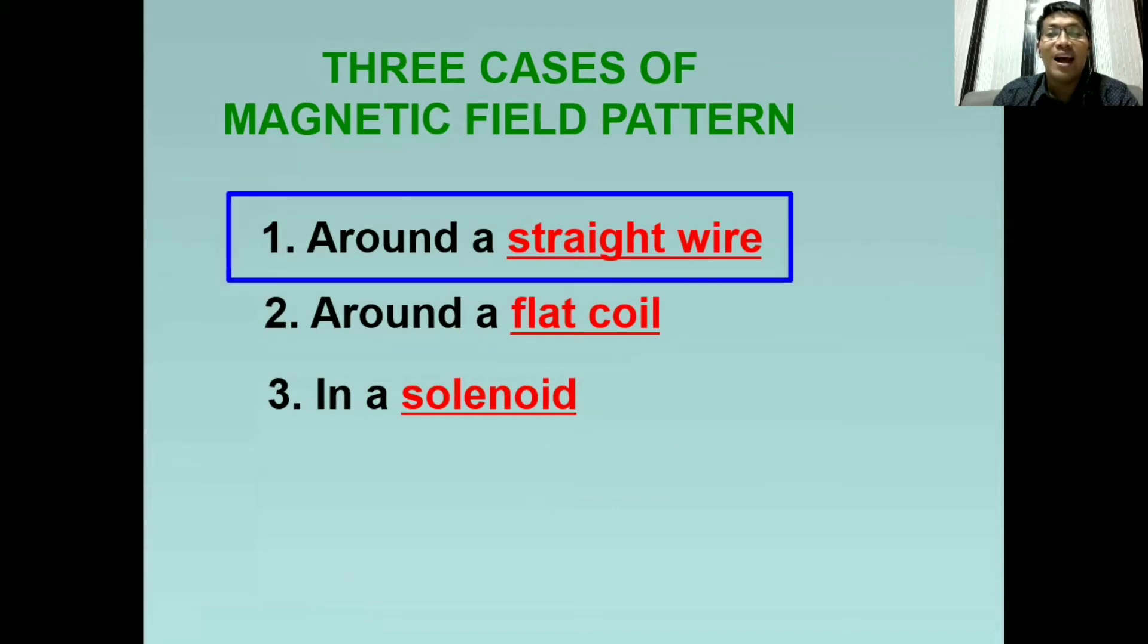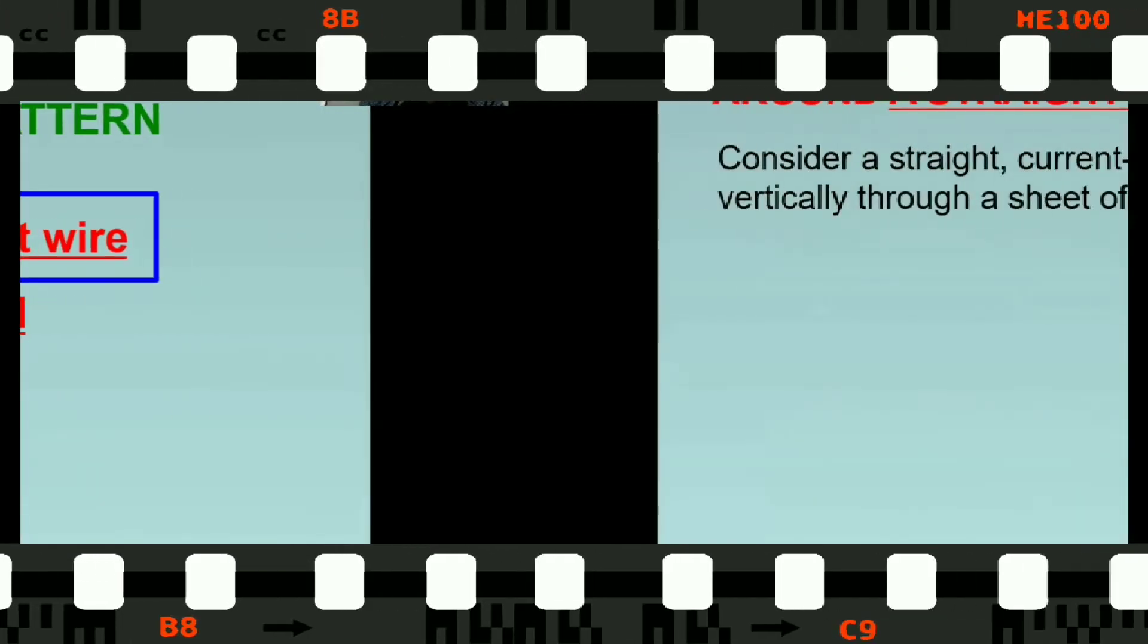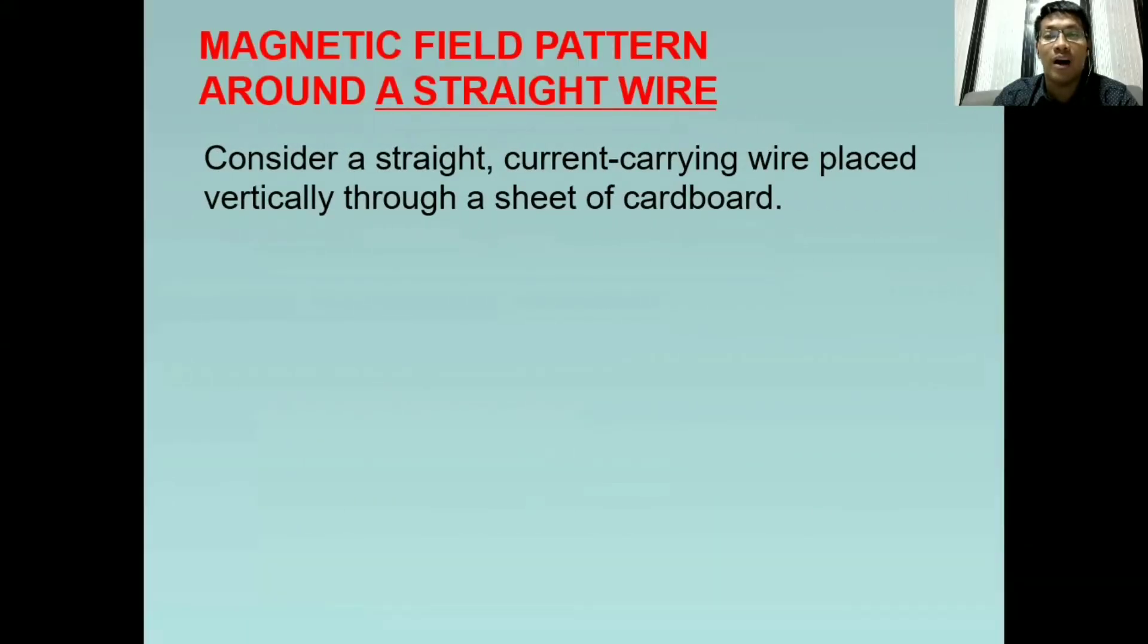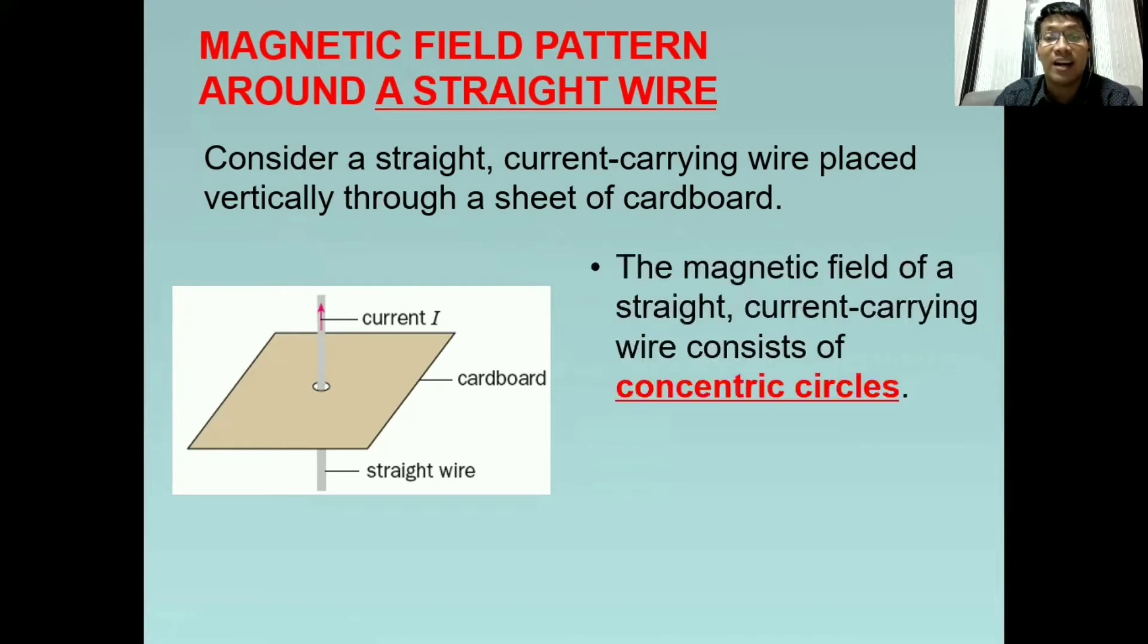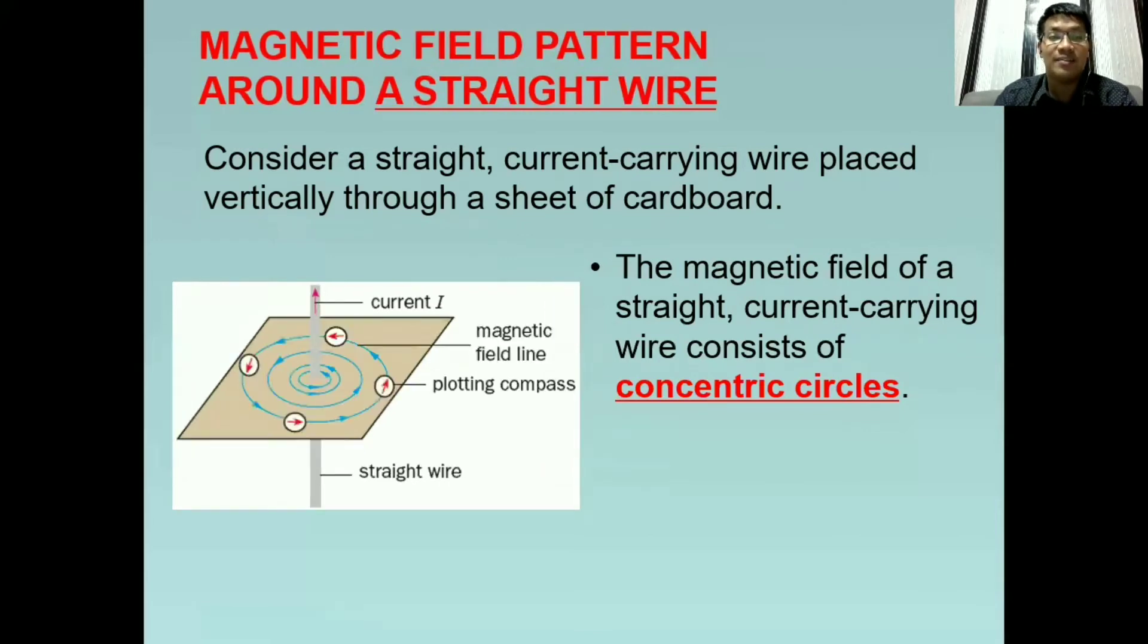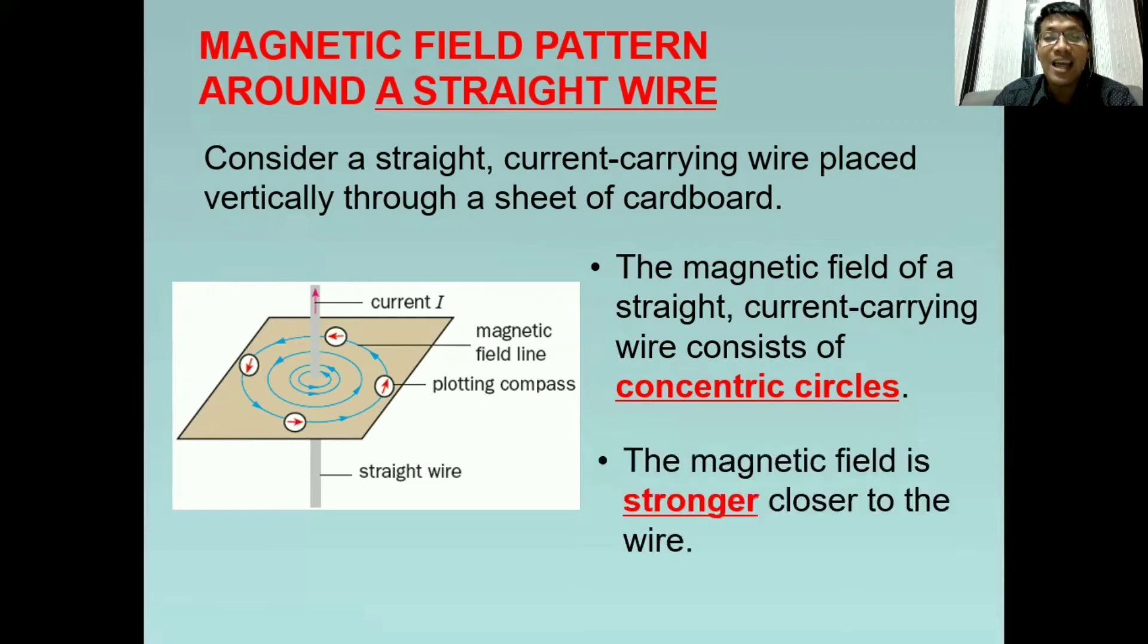Let's start with around a straight wire. Consider a straight current carrying wire placed vertically, nakatayo, through a sheet of cardboard. And it looks like this. Kung may kita ninyo, ang direction ng current ay papataas as symbolized by this pink arrow. And the magnetic field pattern that is produced by this straight wire is described as concentric circles. And it appears like this. Ganito ang itsura ng magnetic field ng isang current carrying straight wire.